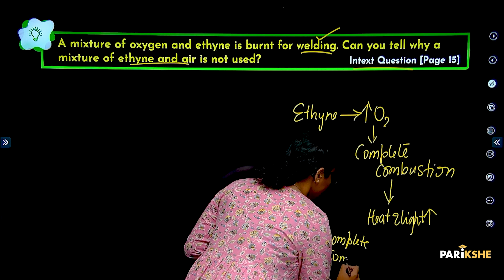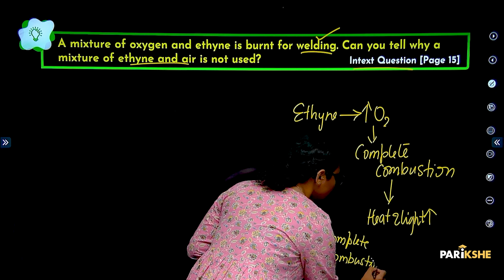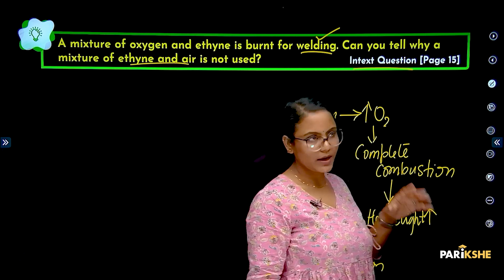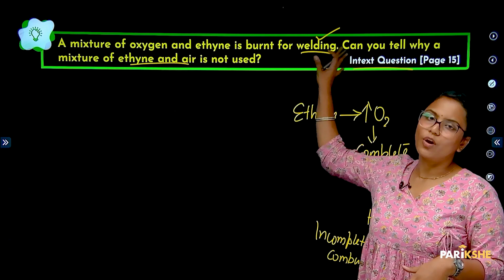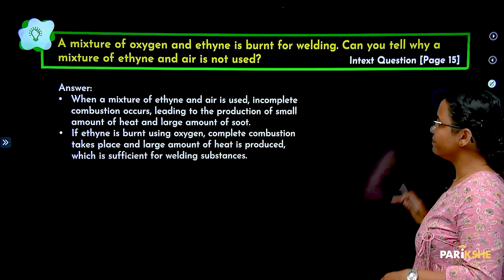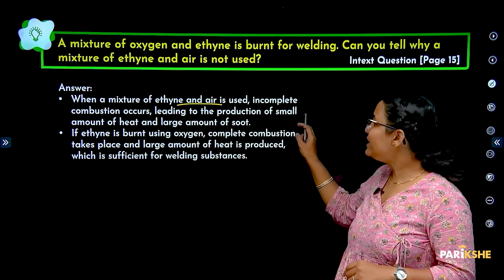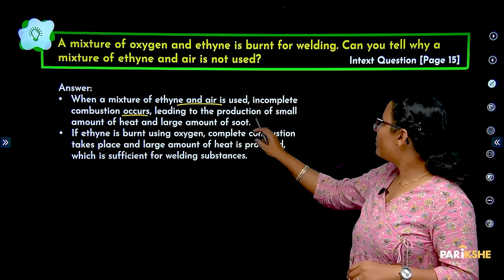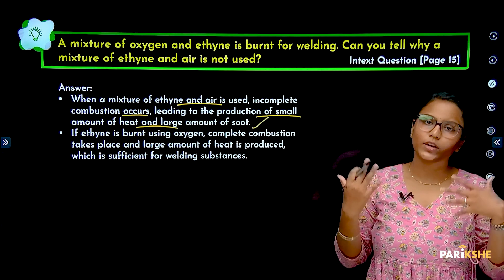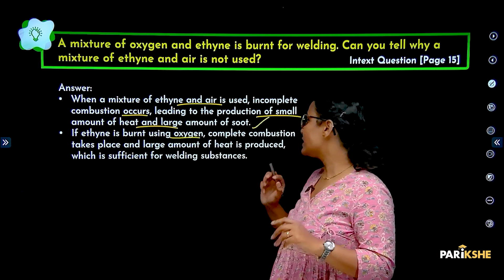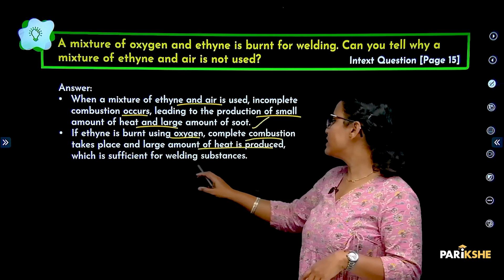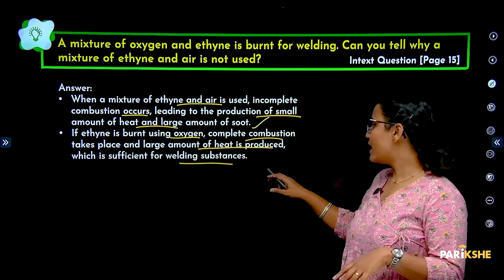In contrast, incomplete combustion produces small amounts of heat and light energy and a lot of soot. When a mixture of ethyne and air is used, incomplete combustion occurs, leading to production of small amounts of heat and light energy — which is not sufficient to bring out welding. But if ethyne is burnt using oxygen, complete combustion occurs and a large amount of heat and light is produced, which is sufficient for welding.